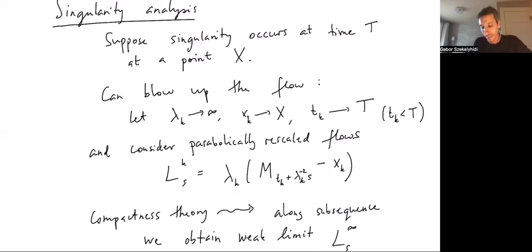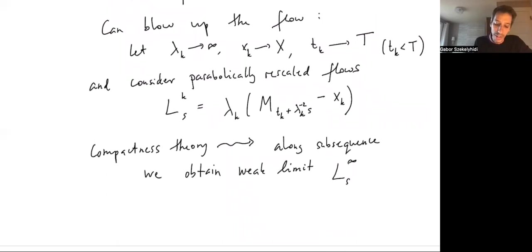Basically we're scaling space by λ_k and time by λ_k squared. This is the parabolic scaling, which will again result in a solution of mean curvature flow.